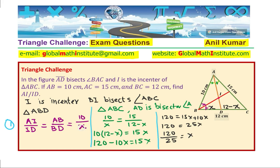Once you know this value of X, you can substitute here and then solve. We will not simplify this, but we will just substitute and then solve further. So AI over ID will now be equal to 10 over the value of X, which we just found, which is 120 over 25. You can simplify this and then get the result.